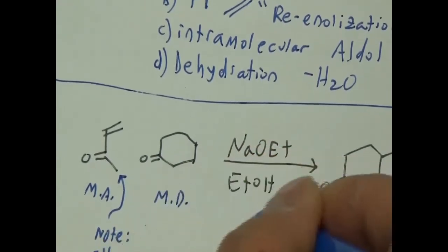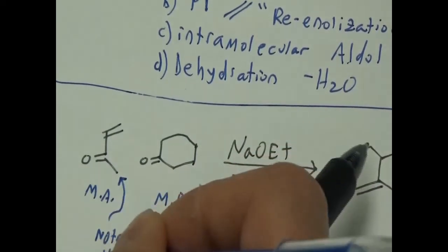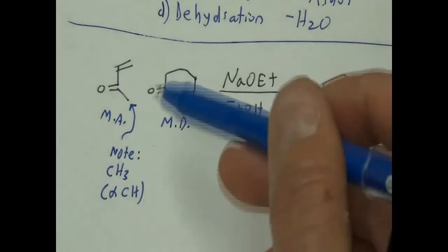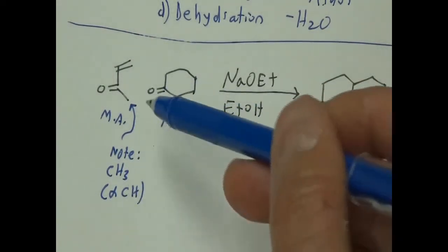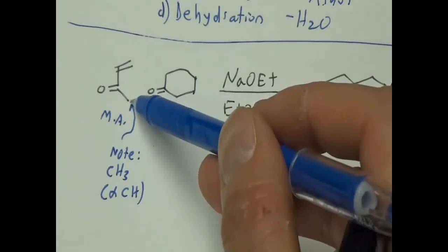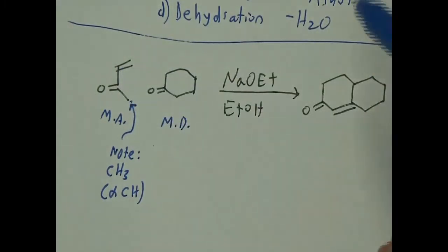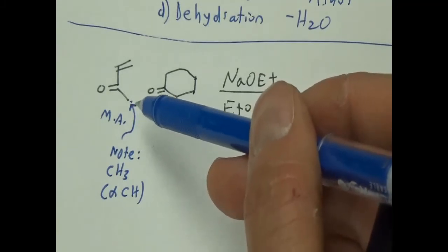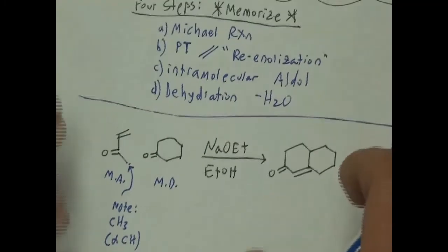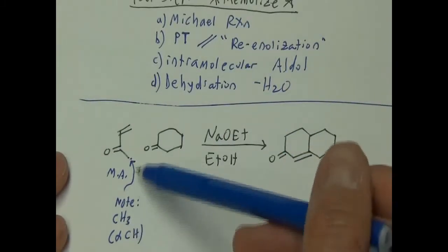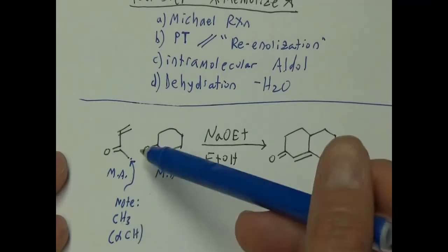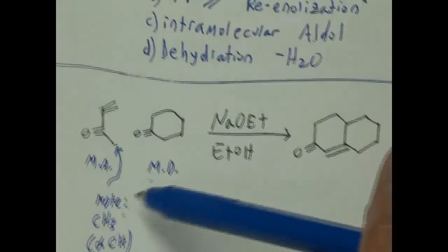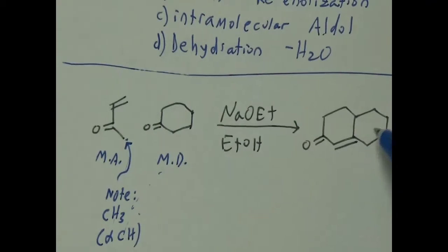This is really critical — notice the CH₃ on the Michael acceptor. Remember the requirement of the Robinson is an enolizable CH. Here we have a CH₃, so there are actually three CHs. These are alpha CHs. The requirement of the Robinson is enolizable CHs on this side of the Michael acceptor — the side opposite the alkene. If you don't have this, it's not going to do a Robinson; it'll just do a Michael and stop.